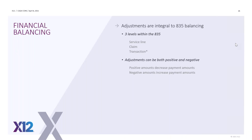Whenever we talk about adjustments, we first have to think about balancing and how critical it is to the 835. The three levels are: first at the service line level — the charge amount minus adjustments equals the paid amount. All of those services and adjustments are summed up to the claim level. And the third level is transaction level — taking all of the claims and balancing it to the payment, plus or minus the provider level adjustments.